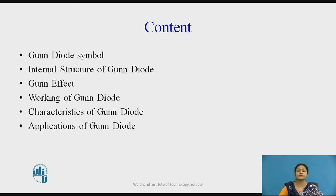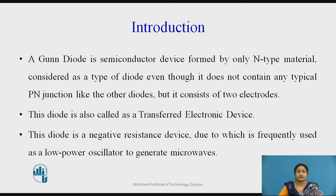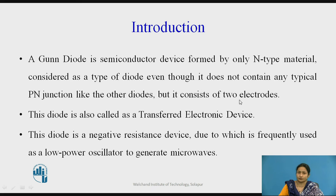These are the contents which we will be discussing in this video lecture. Basically, a Gunn Diode is a semiconductor device which is formed by only n-type material. Unlike other semiconductor devices, there is no p-type and n-type junction. It consists of only n-type material, but it has two electrodes. The device has a lower energy level and a higher energy level. The electrons from the lower energy level are transferred into the higher energy level, which is why these devices are called transverse electron devices.